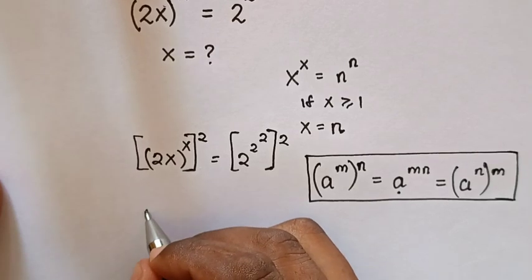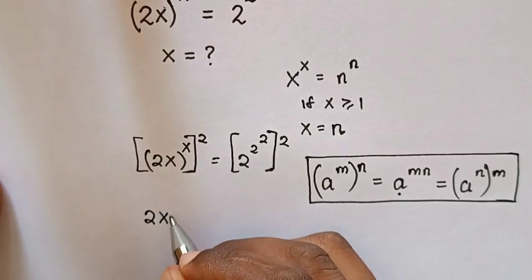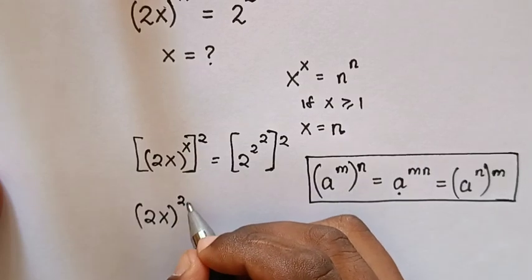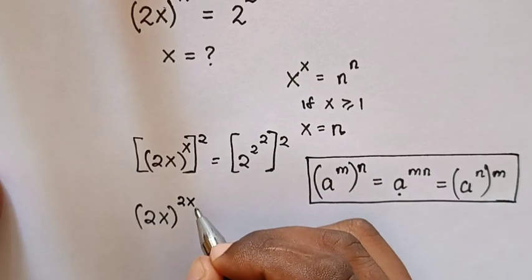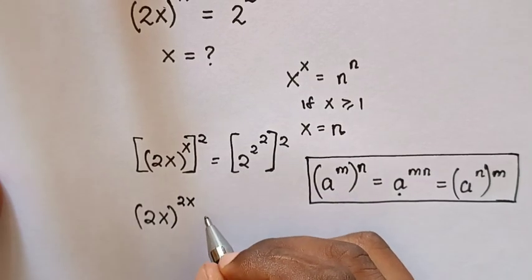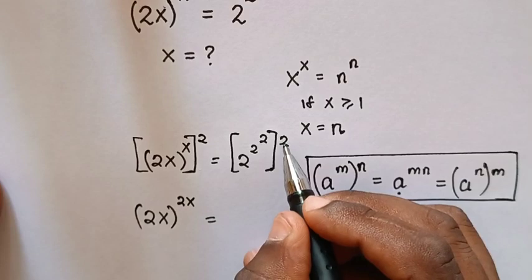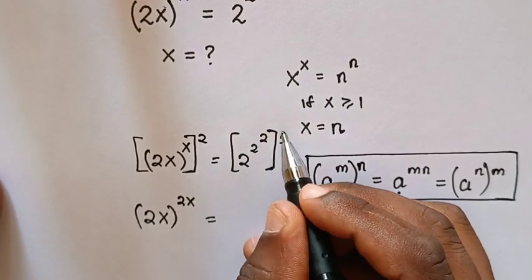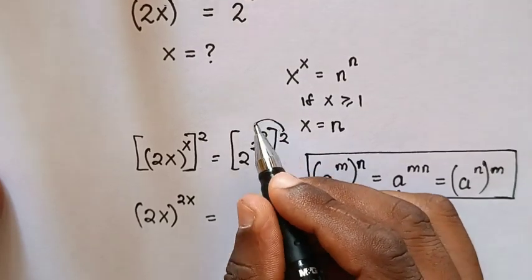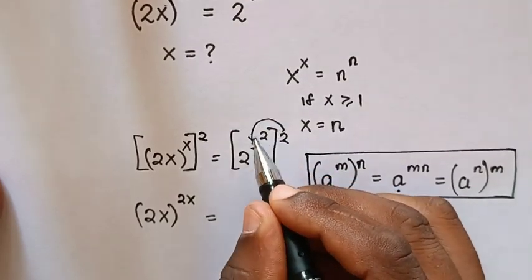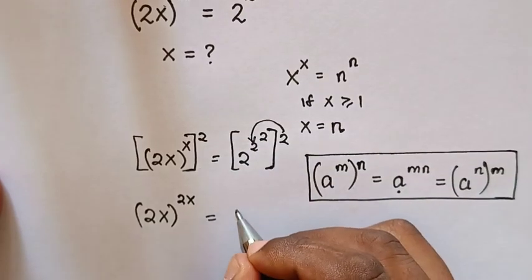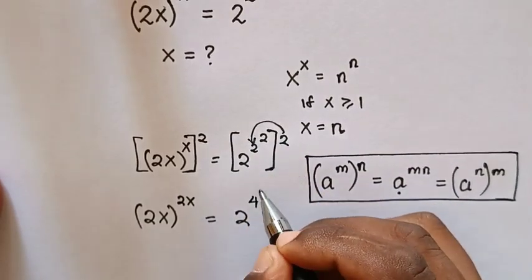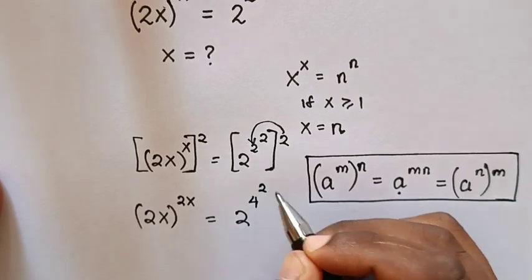So it will be 2x bracket power of 2 times power of x. Here in the power of 2, we will multiply with the first power, so 2 times power of 2 — it will be 2 power of 4 power of 2.